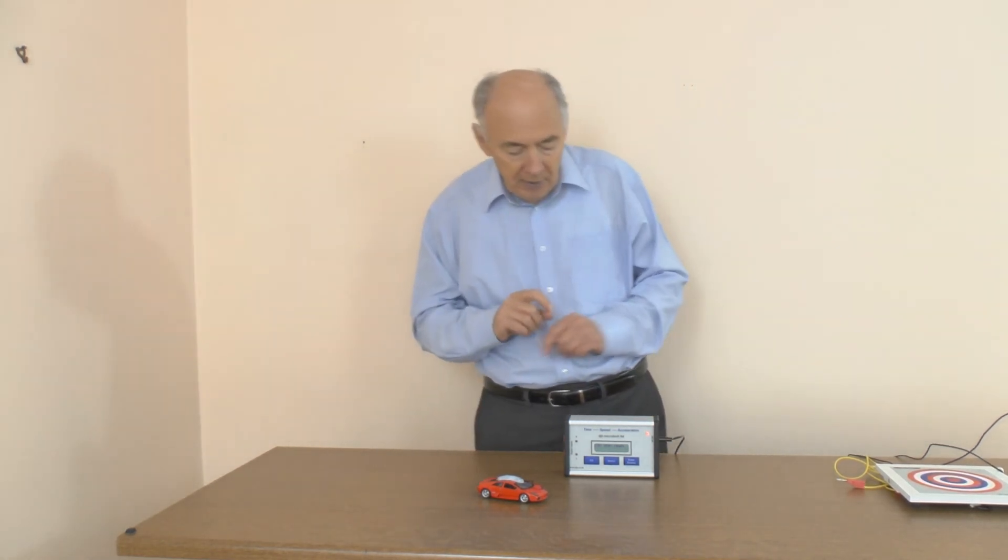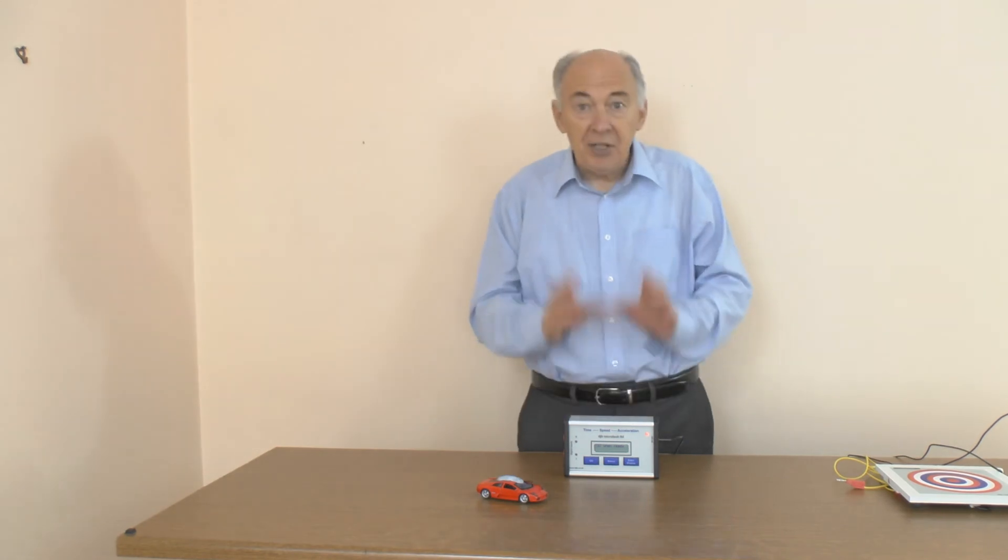You don't want to have to go and calculate longhand v minus u over t for each of these. So the second method just gives you the number.